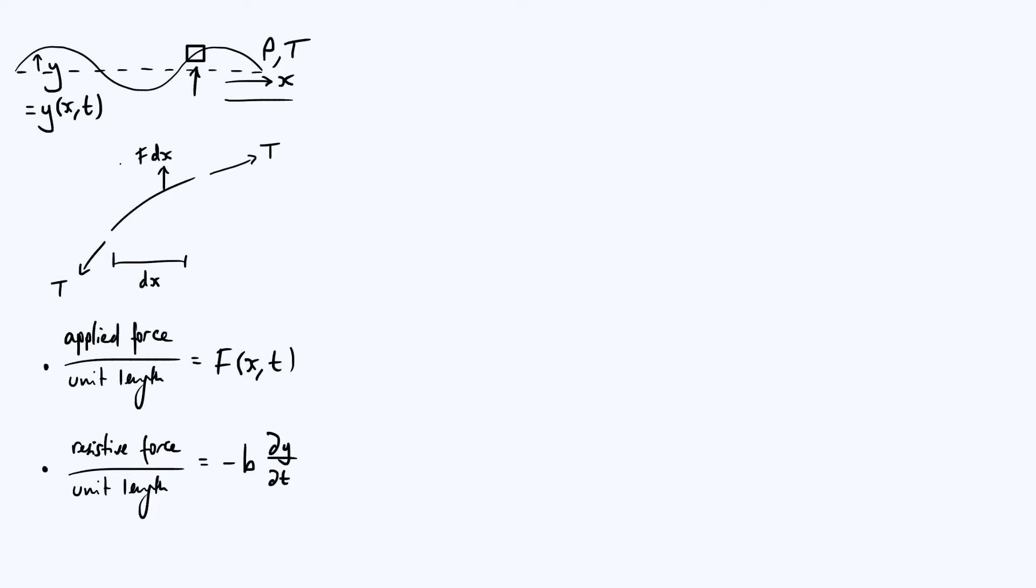You've also got a resistive force, I'm going to draw that also acting in the upwards direction, which we said was minus b dy by dt per unit length, and so resistive force acting on this element in total is minus b y dot, I'm just using shorthand notation dot for a time derivative, again I have to times it by dx because it was a resistive force per unit length.